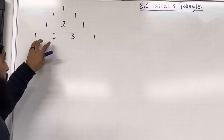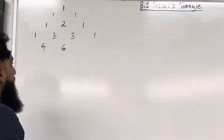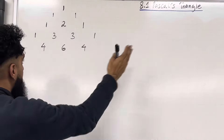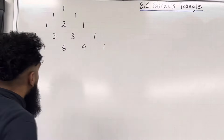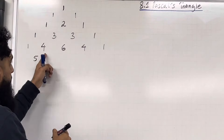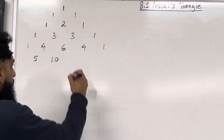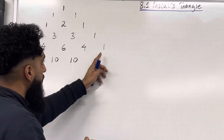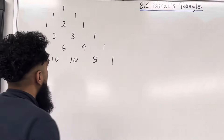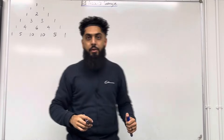In between 2 and 1 will be 2 plus 1, which is 3. And on the outside we will have 1. In between 1 and 3 will be 1 plus 3, which is 4. In between 3 and 3 is 3 plus 3, which is 6. In between 3 and 1 is 3 plus 1, which is 4. And on the outside, 1. Continuing: 1 plus 4 is 5, 4 plus 6 is 10, 6 plus 4 is 10, 4 plus 1 is 5, and on the outside, 1. So the triangle continues in this pattern — this is Pascal's Triangle.